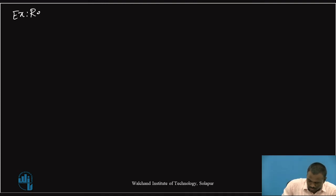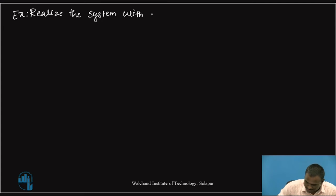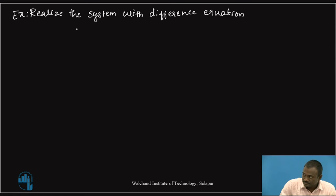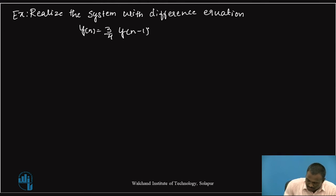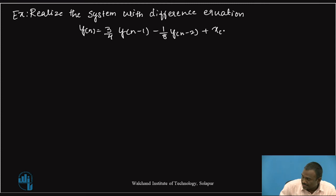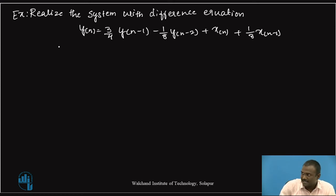Example: Realize the system with difference equation y(n) minus (3/4)y(n−1) minus (1/8)y(n−2) equals x(n) plus (1/3)x(n−1) in cascade form.